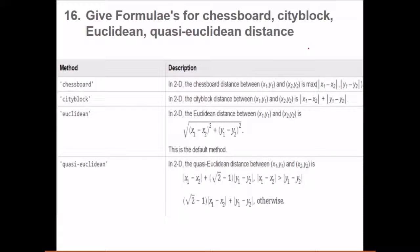Give formulas for chessboard, city block, Euclidean, and quasi-Euclidean distance. Chessboard distance, like a chessboard—in 2D, the chessboard distance between two points 1 and 2 will be the maximum of |x1 - x2|, |y1 - y2|. We take two points, x1 y1 and x2 y2. We compute x1 minus x2, y1 minus y2, and take the maximum of the value. That is the distance.